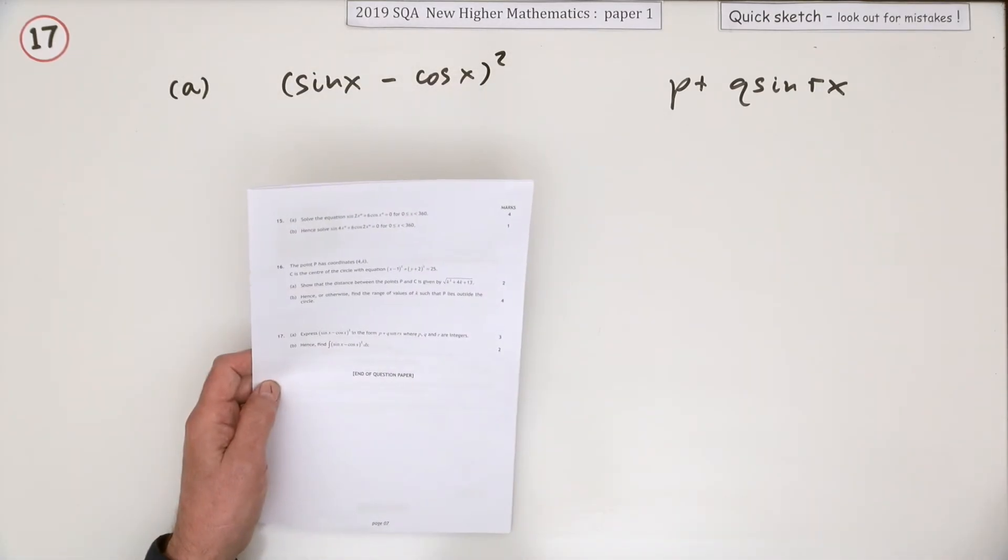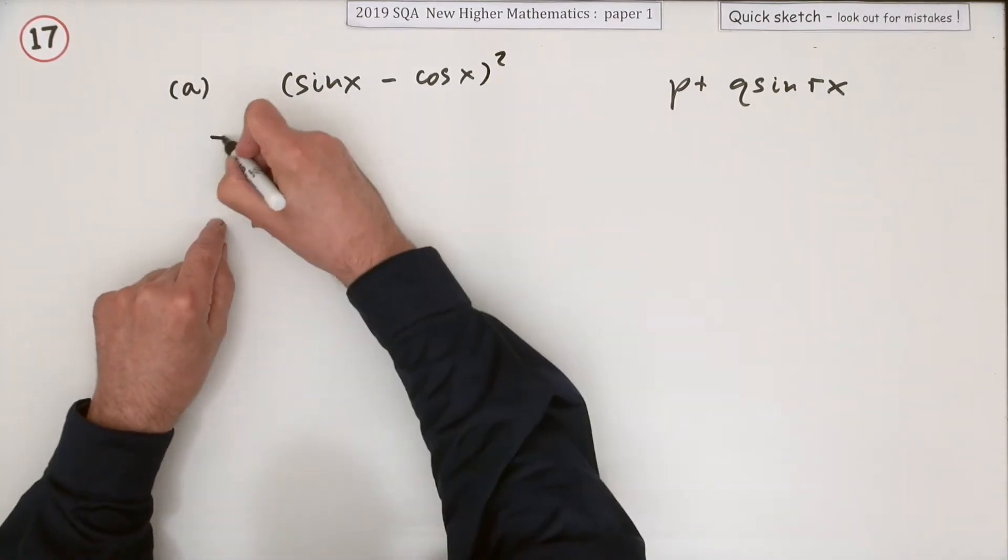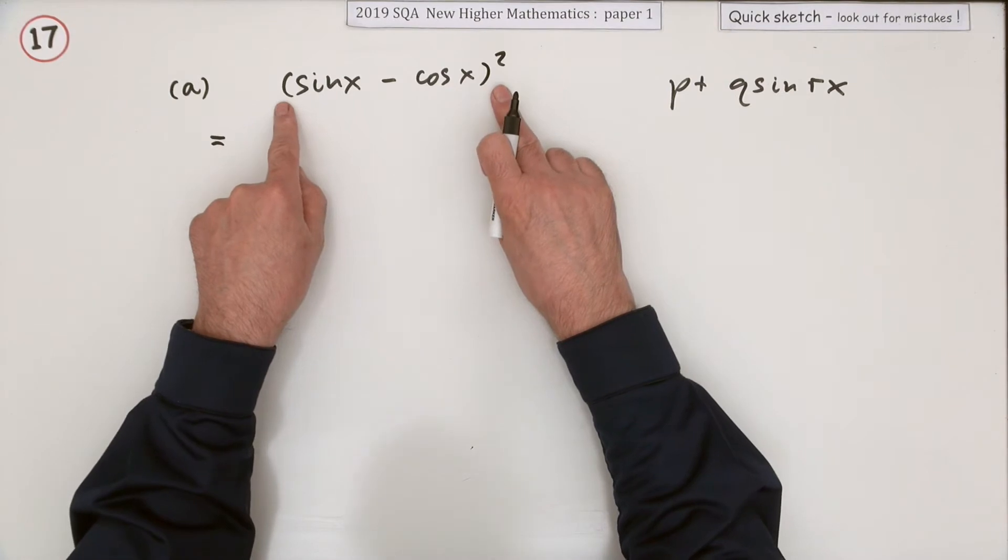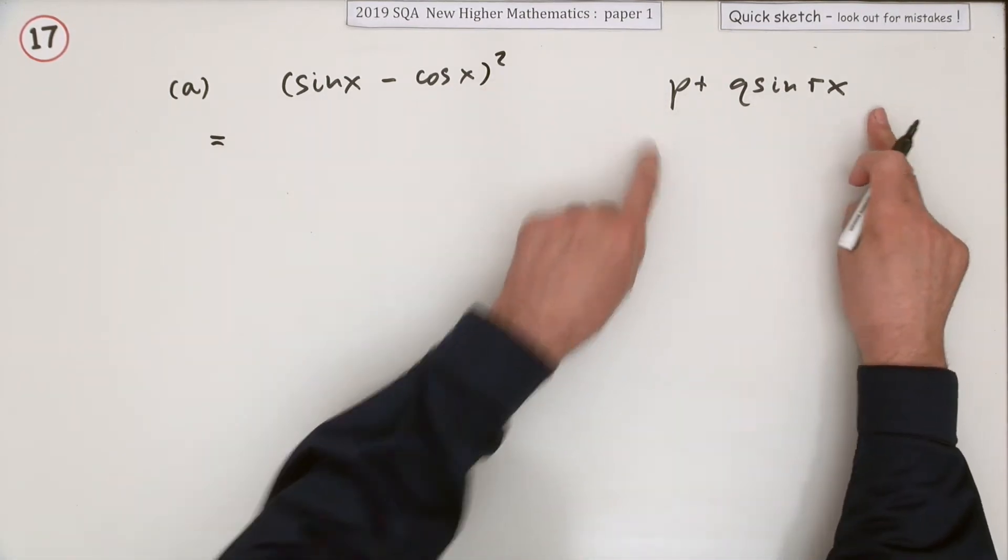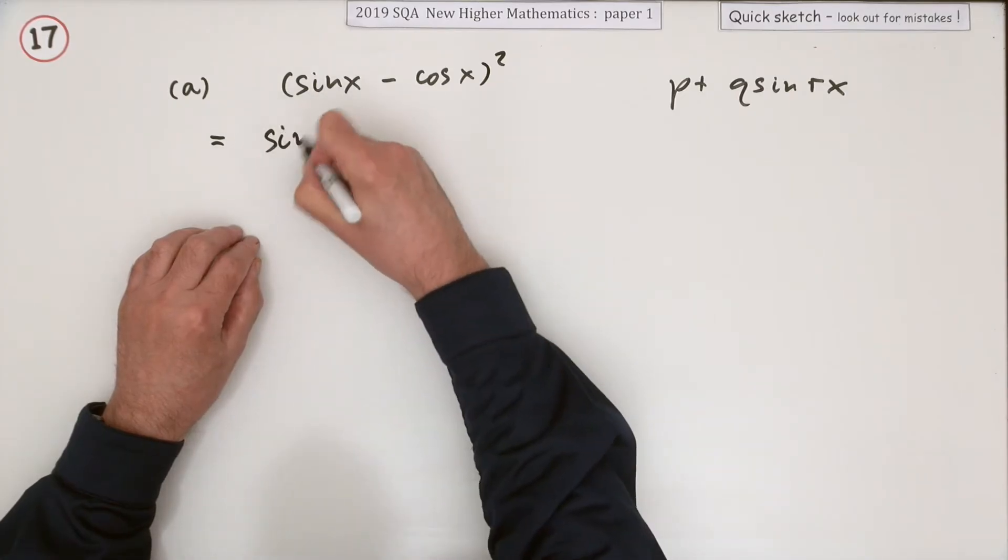For three marks, you have to write this in this form, so you just do whatever needs to be done to make it look like this. Now there's no squares here, so multiply out the brackets. That'll be square the first...